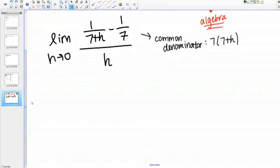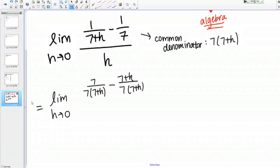We want to rewrite both of those fractions so that they have that common denominator. The first fraction is going to need to be multiplied by 7 over 7 in order to have that denominator we want. The second fraction is going to be multiplied by 7 plus H over 7 plus H. Notice that if we canceled out those factors we just added in, we would get back to the original problem. We haven't changed the problem in any way, we've just rewritten it.